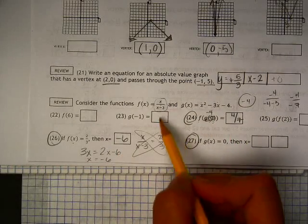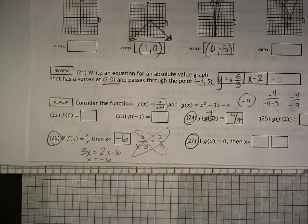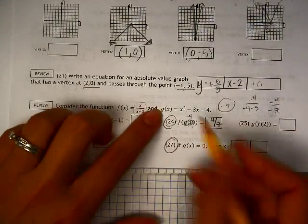And you plug it in. You would say negative 6 over negative 9 is positive 2 thirds. Our very last one is 27.